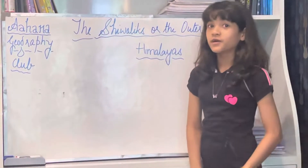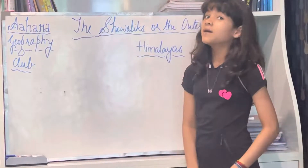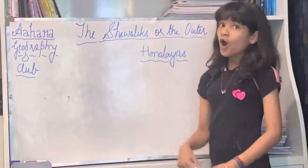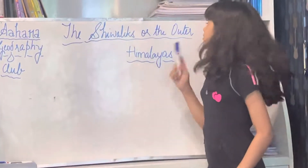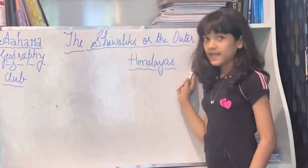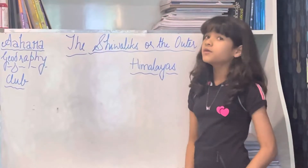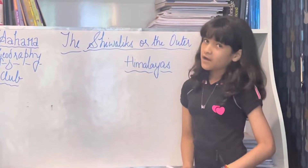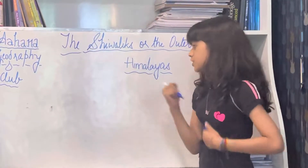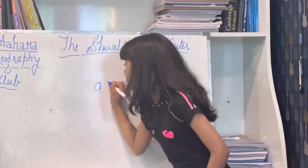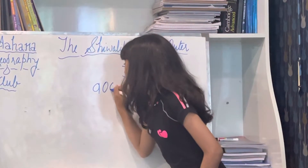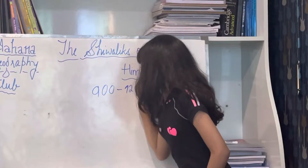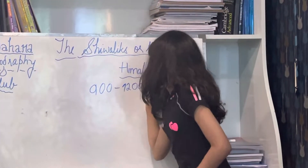Having covered the Himachals, we're now learning about the Shiwaliks, also known as the Outer Himalayas. They lie to the south of the Himachals and have an average elevation between 900 and 1200 meters above sea level.